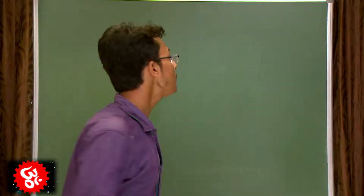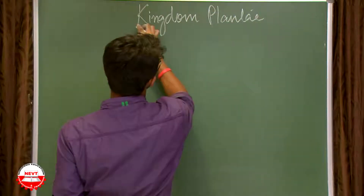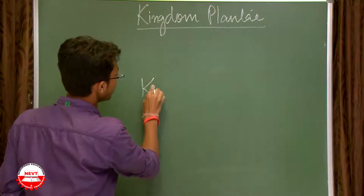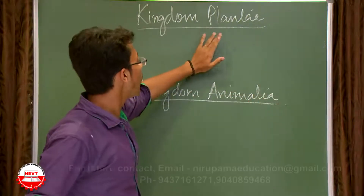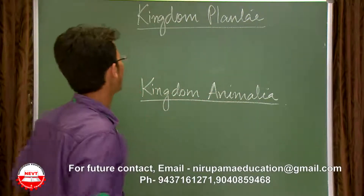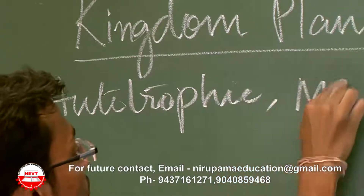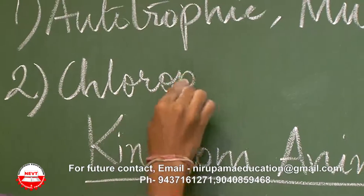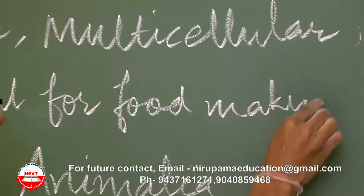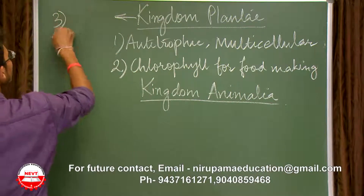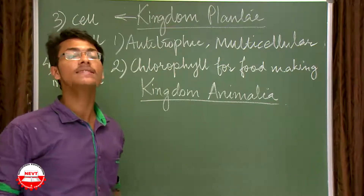The fourth kingdom that is very important is Kingdom Plantae or Plant Kingdom. Kingdom Plantae and Kingdom Animalia we have to discuss in detail — next we will discuss all the classes under both kingdoms. For now, just an overview. They are autotrophic, they are multicellular, they have chlorophyll for food making, and the most important point is they have cell wall.